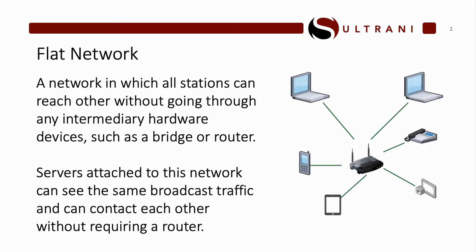Flat networks — I'm not going to dig into the weeds on this, but just know that this is a network where every station, everything on this network can see everything else. It tends to go through only one kind of step. Like in most houses, everything in your house — your TV, your iPad, your laptop — it all goes through your home router, and everything on that network can see everything else. They may all go to the same router and have different IPs, but they're logically the same.